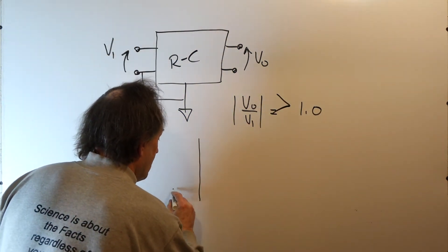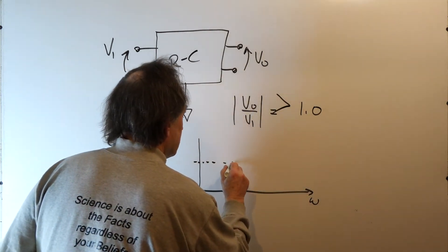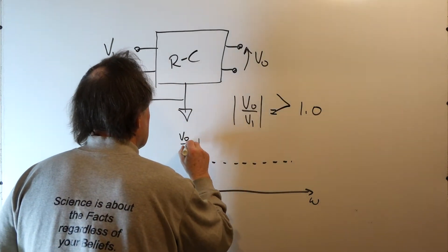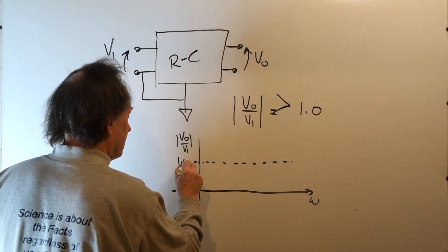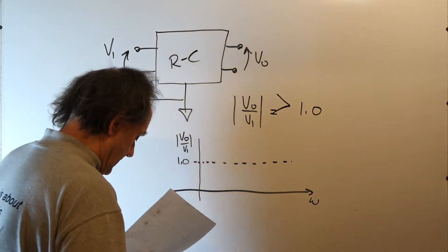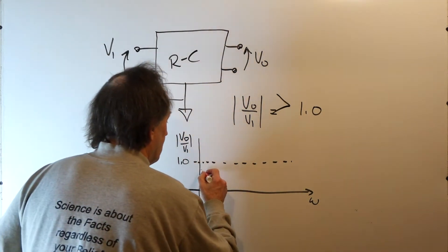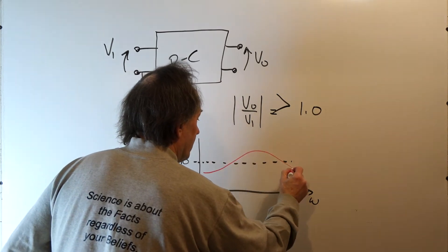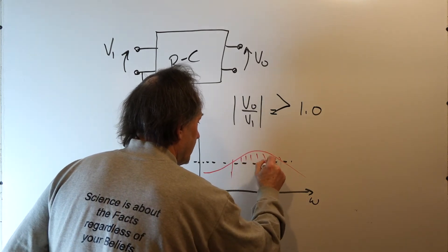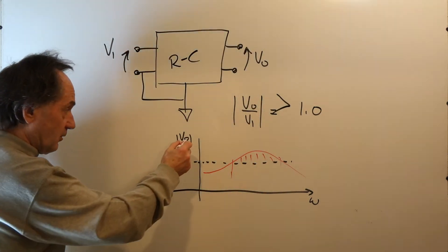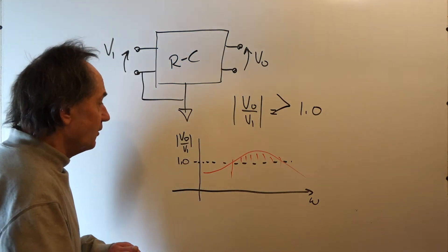If you're to do a magnitude plot versus frequency, what we're asking - this is your magnitude Vout over Vin, V1. There is where the ratio is one. Is it possible over some band of frequencies where the ratio of the output to the input is greater than one? That is, that the output voltage is greater than the input voltage.